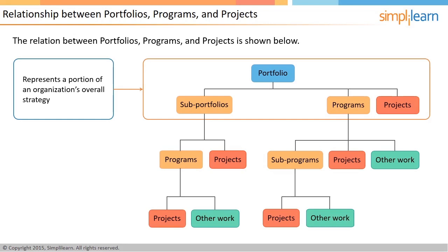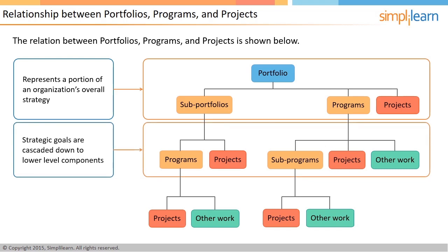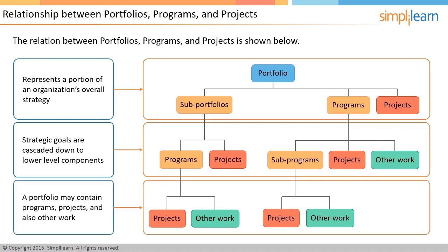A portfolio is part of an organization's overall strategy and represents a conscious decision to invest in it. The overall objectives of a portfolio are then cascaded down to lower-level components, which could be subportfolios, programs, or projects. These components can be further broken down into smaller components for ease of management. Although a project may not contain operations, a program, or a portfolio, it can include other work such as training and development or customer support. If this other work has synergy with the overall objectives and adds to the capability to deliver higher-level benefits, it can be included in the program or portfolio as well.